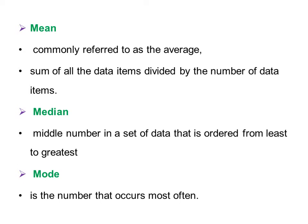Next is mode. Mode means it is the number that occurs most often. That is, how many times a number is repeated — that repeated number in the series is called the mode. To summarize: mean is the average, the sum of all items divided by the number of items; median is the middle number; and mode is the repeated number.